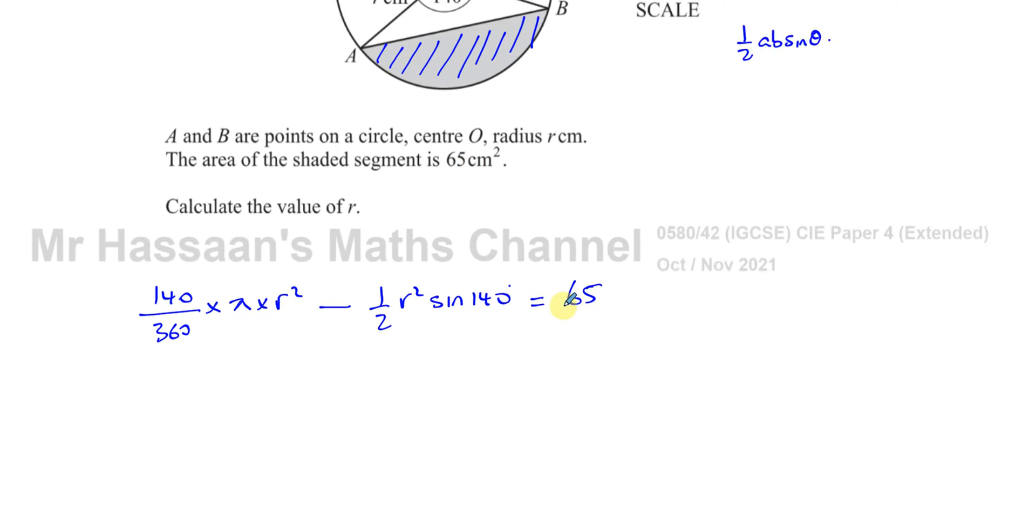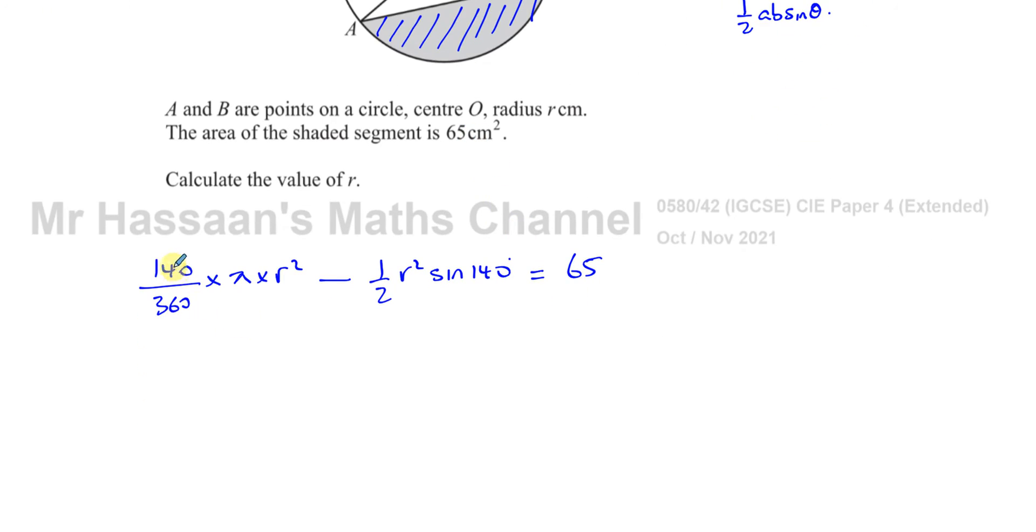The only thing we don't know here is r, so if I just try to simplify this as much as I can, 20 goes into both of these. 20 goes into 140 seven times and 20 goes into 360 eighteen times. So I've got 7 over 18, or 7 pi over 18, times r squared minus, and I'm going to have a half of sine 140.